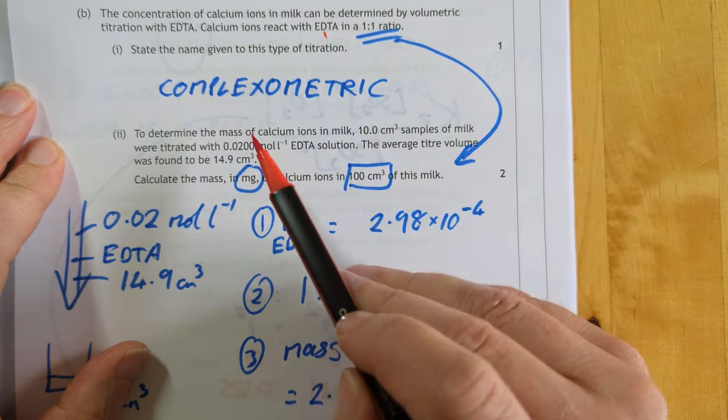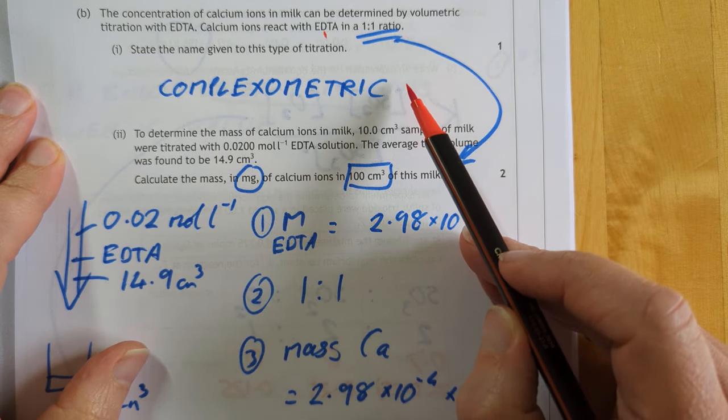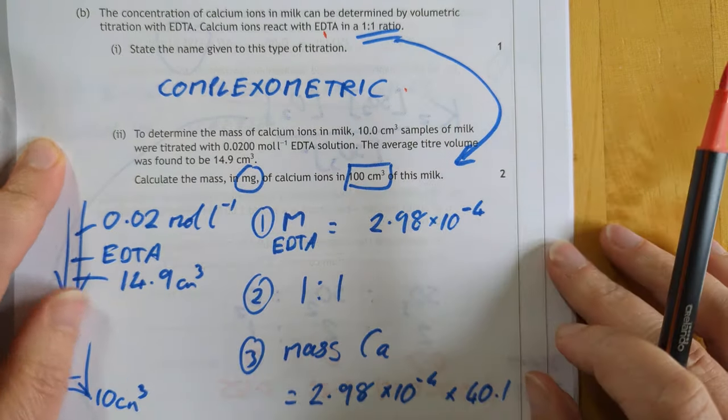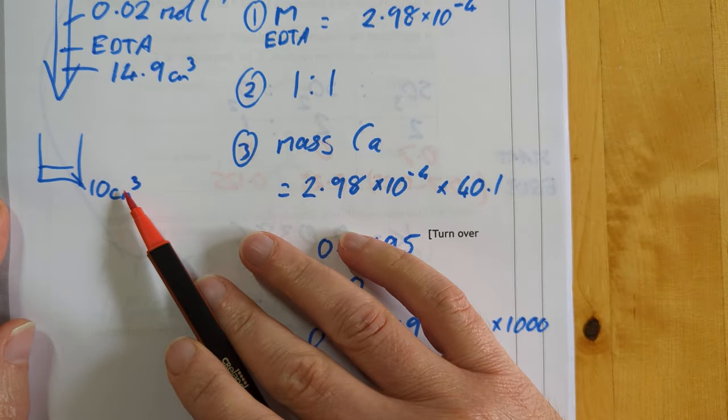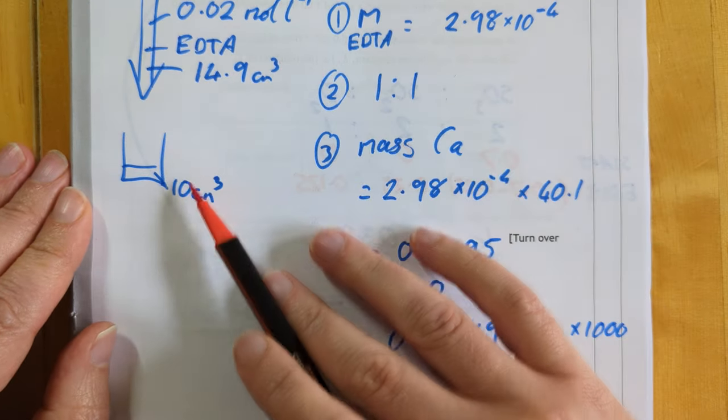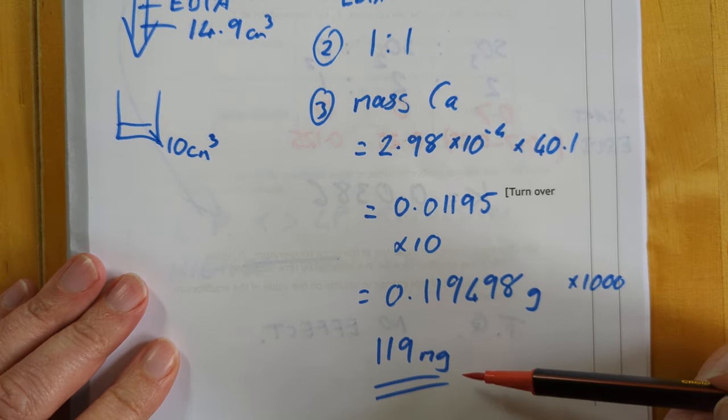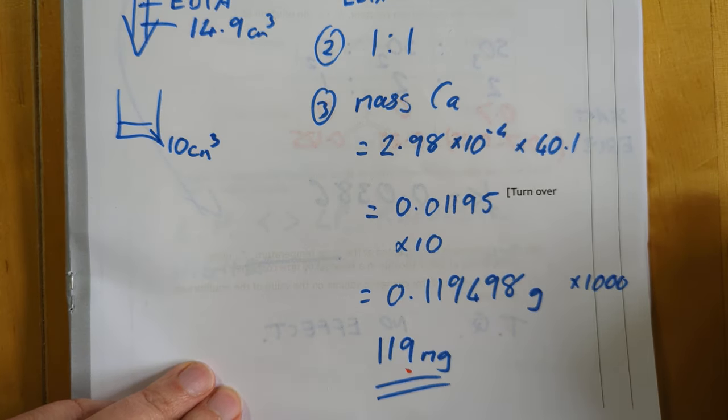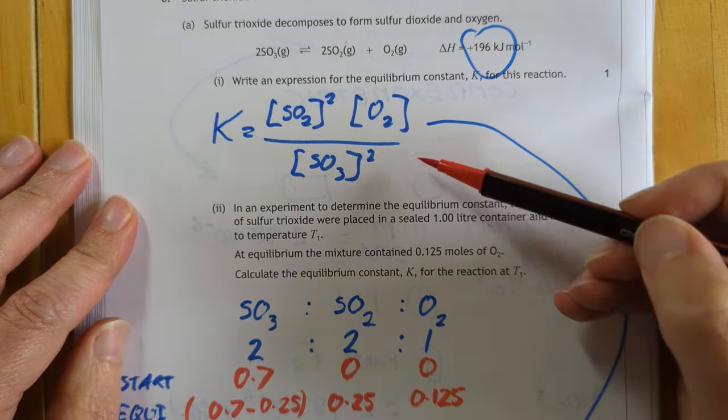Titration using EDTA is a complexometric titration because you're making a complex. Pretty obscure little part of the course that, but it is there, it's in writing from the SQA, so a lot of people I suspect might not get that one. This is my titration nonsense here. I did a little diagram of what was going on. Don't know why I'm off to the left, sorry. A little diagram of what's going on here, and my calculations are here, and my final answer which they wanted in milligrams, as if there wasn't fiddly enough, is 119. This is only two marks worth, but welcome to advanced higher.